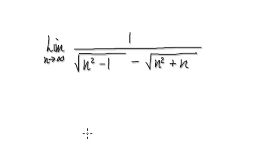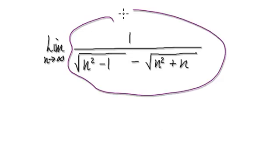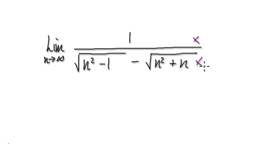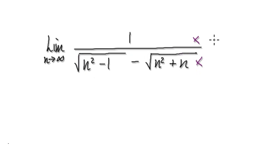Next one: find the limit of this sequence as n tends to infinity. Press pause and have a go. To do this, we are going to multiply the top and bottom by the conjugate of this.